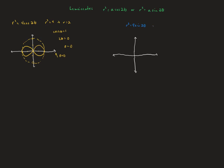Similarly, for r² equals 9·sin(2θ), the biggest r can be is 3, so I'll draw a guideline circle of radius 3. This is biggest when sin(2θ) equals 1, and sine is biggest at π/2, which means 2θ equals π/2, so the lemniscate is oriented along θ equals π/4. It's a figure 8 oriented along the angle θ equals π/4.